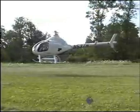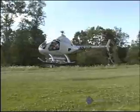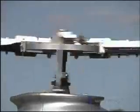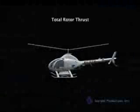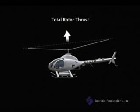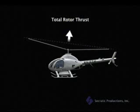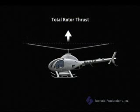Helicopters don't need runways, and forward movement isn't required for the helicopter to maintain maneuverability. As the rotor blades spin, they create an aerodynamic force — a combination of lift and thrust — which we'll call total rotor thrust. Total rotor thrust is always perpendicular to the tip-path plane of the blades. In this animation, you can see that total rotor thrust is not always 90 degrees relative to the helicopter, but 90 degrees relative to the path of the tips of the rotor blades.